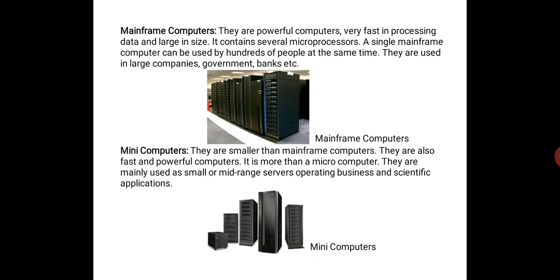Mainframe computers. They are powerful, fast in processing data, and large in size. A single mainframe computer contains several microprocessors and can be used by hundreds of people at the same time. They are used in large companies, government, and banks. Mainframe computers are similar to supercomputers but smaller in size and less powerful. Workers in an organization can access different files and documents simultaneously using the mainframe computer.